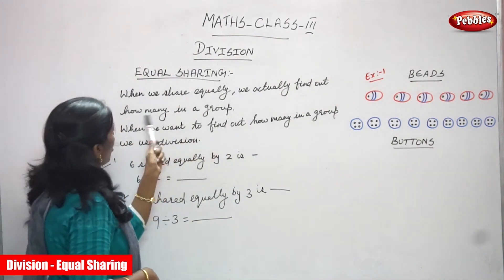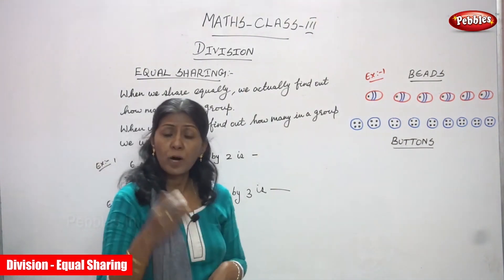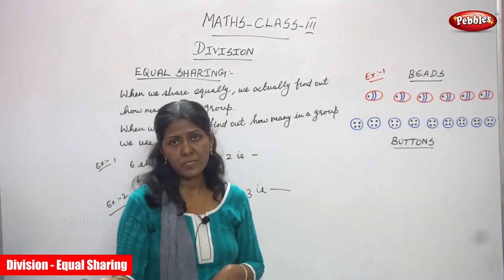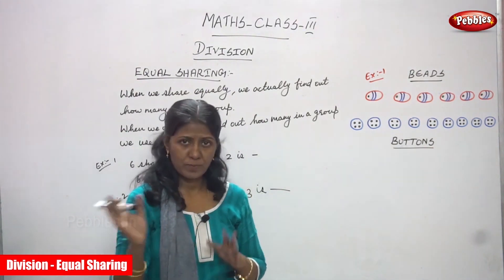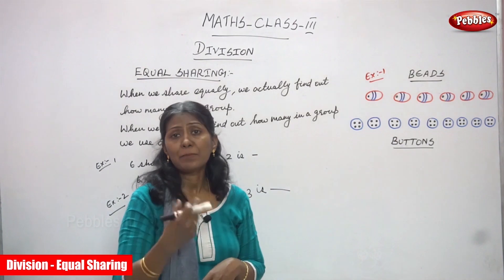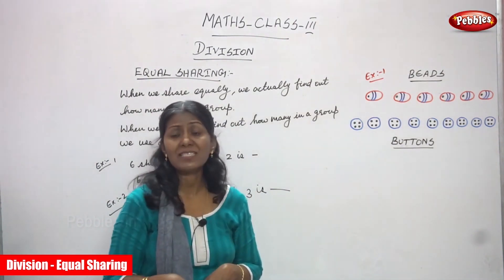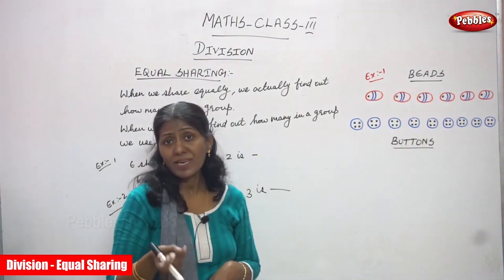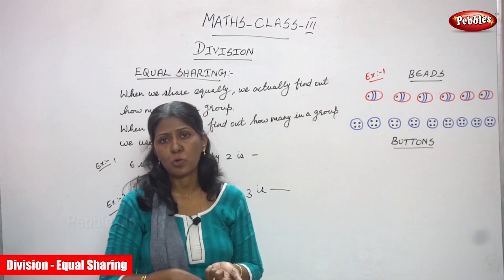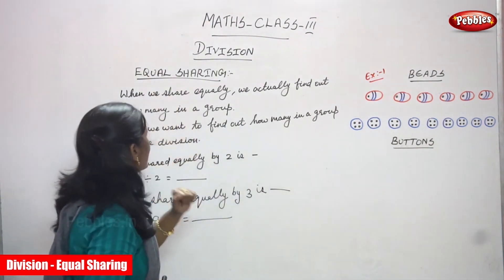We actually find out how many in a group. So in each of the 5 groups we will find out how many chocolates — 2 chocolates. That means 5 groups are there, and I am giving 2 chocolates to each group. Each child gets 2 chocolates in 1 group. That is called equal sharing.